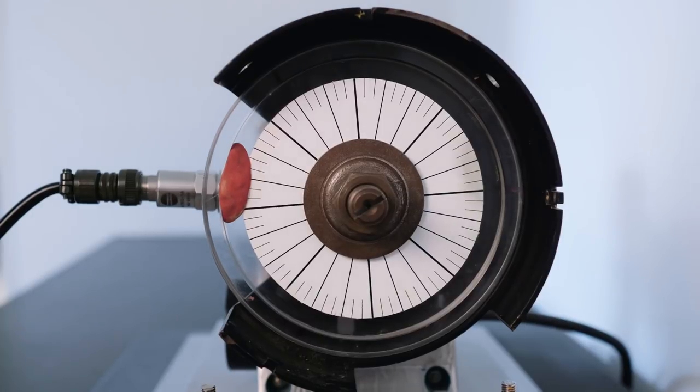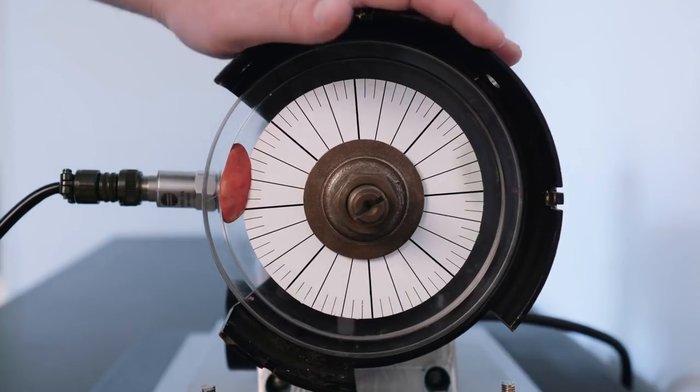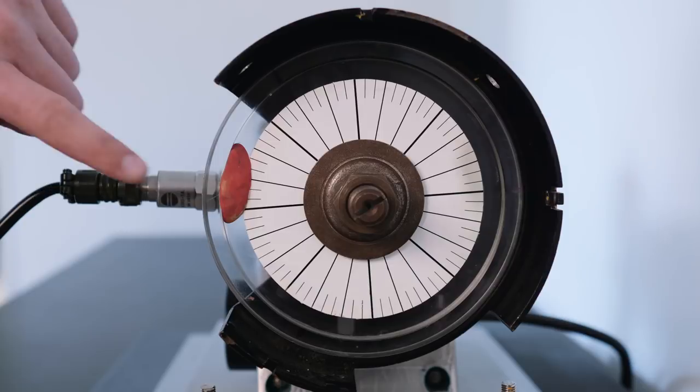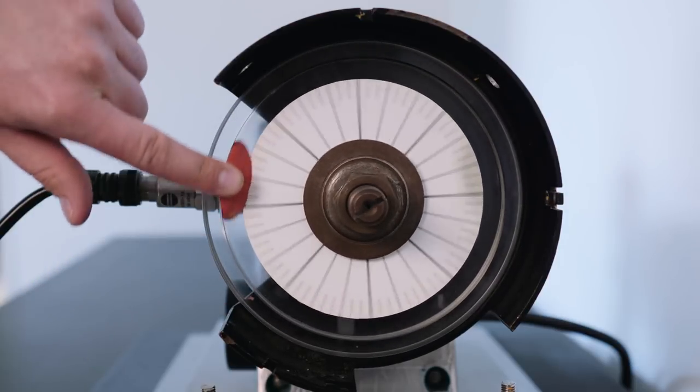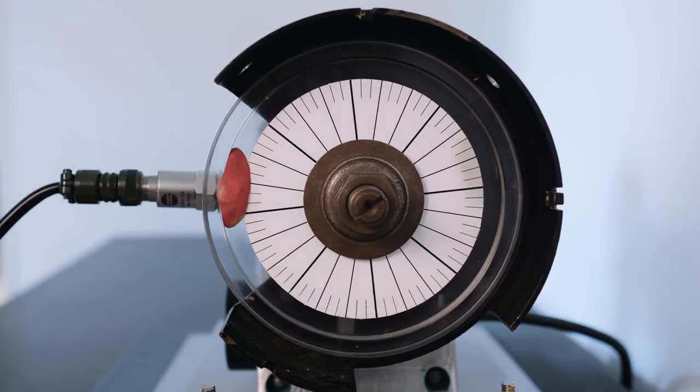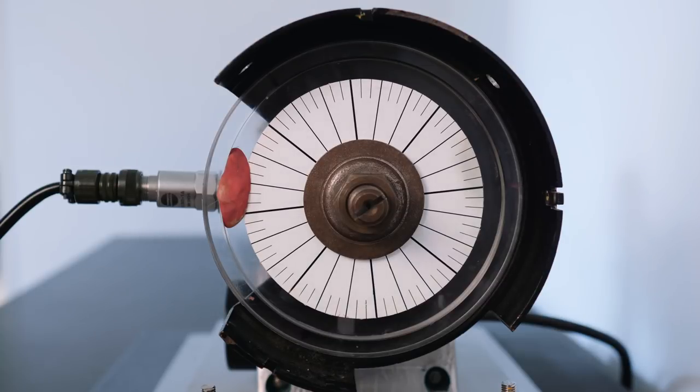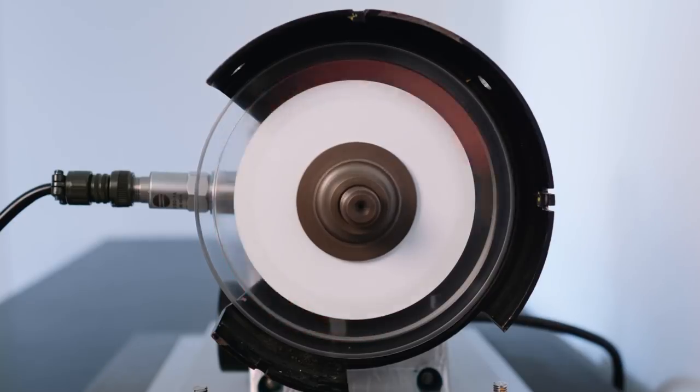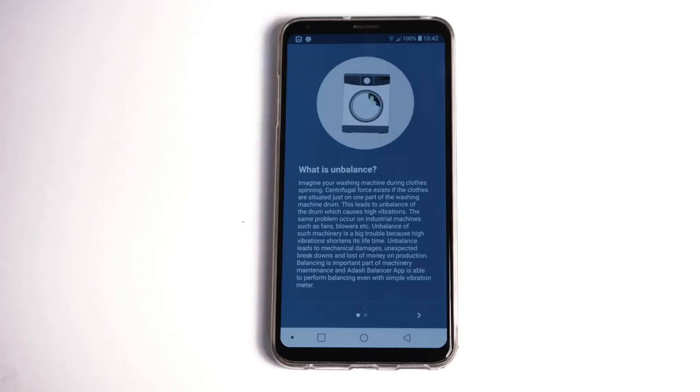We will perform balancing job on this grinder demo rig. We unbalanced it on purpose by this red plasticine. In practice you obviously won't see this weight which causes the unbalance of the machine. Remember that the speed of the machine has to be constant during the balancing process. Let's get going.